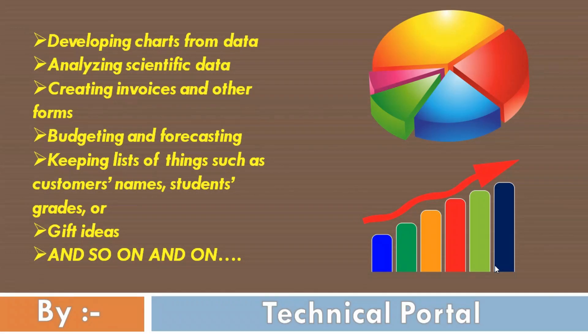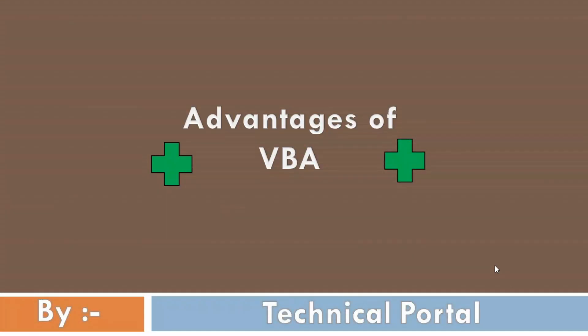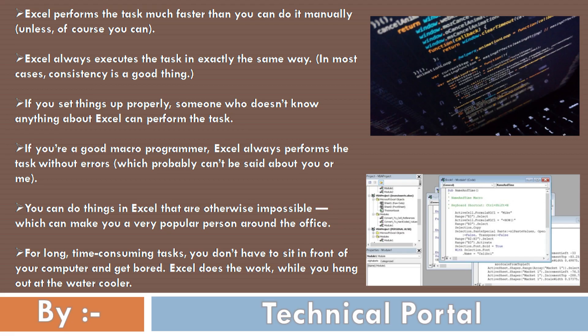Rather than struggling through a tedious sequence of commands, you can click a button and let your macro do the work. Now let's look at the advantages of VBA. Excel performs tasks much faster than you can do manually. Excel also always executes the task in exactly the same way — in most cases, consistency is a good thing.